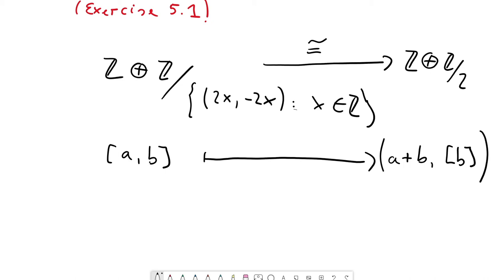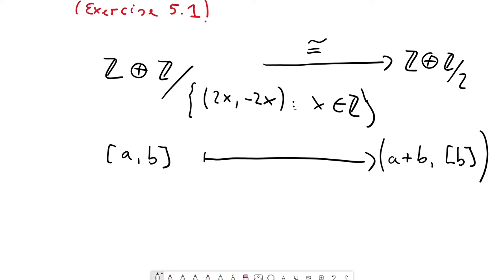It's a well-defined map of sets. Why is it a group homomorphism? This is clear because it's defined linearly. It's also obviously surjective. Now we need to prove injectivity. We already discussed that it's a group homomorphism, so we can decide on injectivity by considering the kernel.